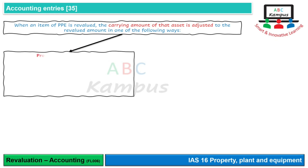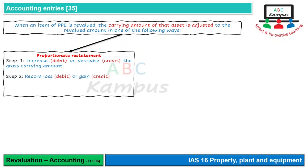पहला way है proportionate restatement। इस method में step one के अंदर हम asset को increase या decrease कर देते हैं - increase करेंगे तो debit, decrease करना होगा तो credit - उसकी gross carrying amount को change करते हैं। Step two में अगर loss हुआ हो तो debit, अगर gain हुआ हो तो credit। Step three में जो balancing figure होती है उसे accumulated depreciation के रूप में record कर लेते हैं।